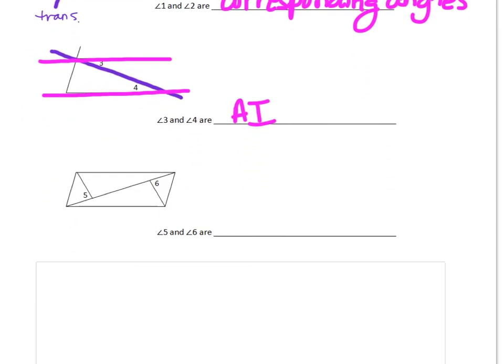All right, let's look at one more. Again, find your transversal first. We have a lot of lines in this one, so find the line that connects angle five and angle six and highlight that one. The two coplanar lines are the lines that give you the rest of each angle — for angle five it's this line, and for angle six it's this one, extended. Angles five and six are not on the inside; they're on the outside, so those are exterior. They're on alternate sides of the transversal, so these are alternate exterior angles.